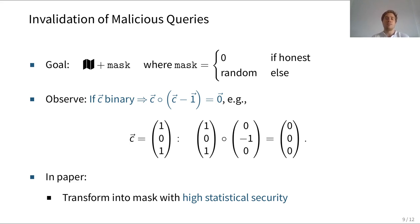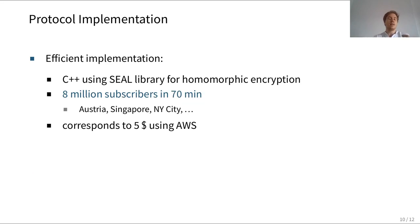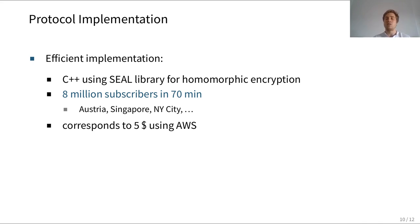We implemented this protocol in C++ using the Microsoft SEAL library for homomorphic encryption. We benchmarked the protocol for creating a heat map of 8 million subscribers — sufficient for an entire country like Austria or cities like Singapore and New York City. Our benchmarks showed that creating one heat map takes just 70 minutes, which is very feasible in practice. When outsourced to Amazon Cloud, this corresponds to a cost of only $5, making it practical to generate these heat maps, for example, once a week.